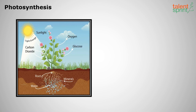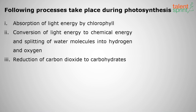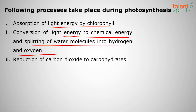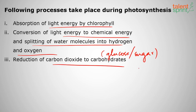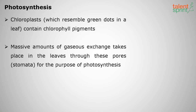Looking at the diagram of photosynthesis: it takes carbon dioxide and water, and in the presence of sunlight produces glucose, oxygen, and water. The following processes take place: first, absorption of light energy by chlorophyll; then conversion of light energy into chemical energy; splitting of water molecules into hydrogen and oxygen; and reduction of carbon dioxide to carbohydrates, that is glucose or sugar.